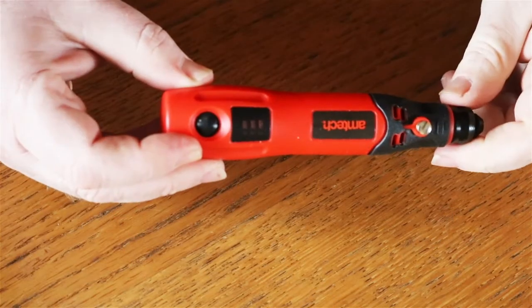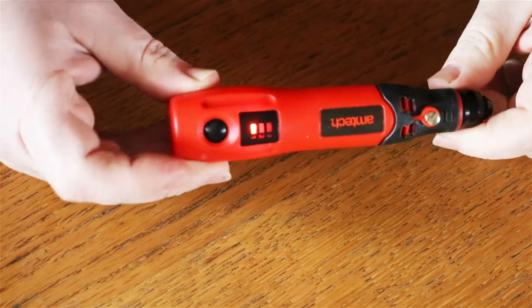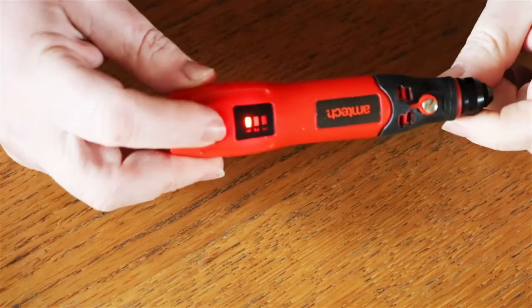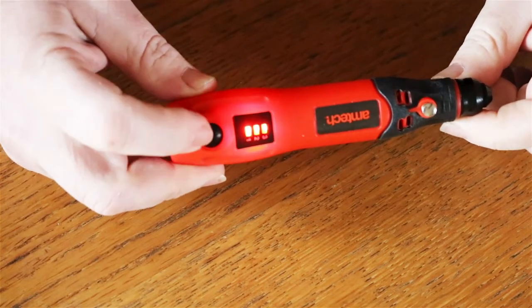The mini engraver has three settings. You press it once and it will rotate at 5000 revs, twice for 10,000, three times for 15,000. Press it again and it will turn off.